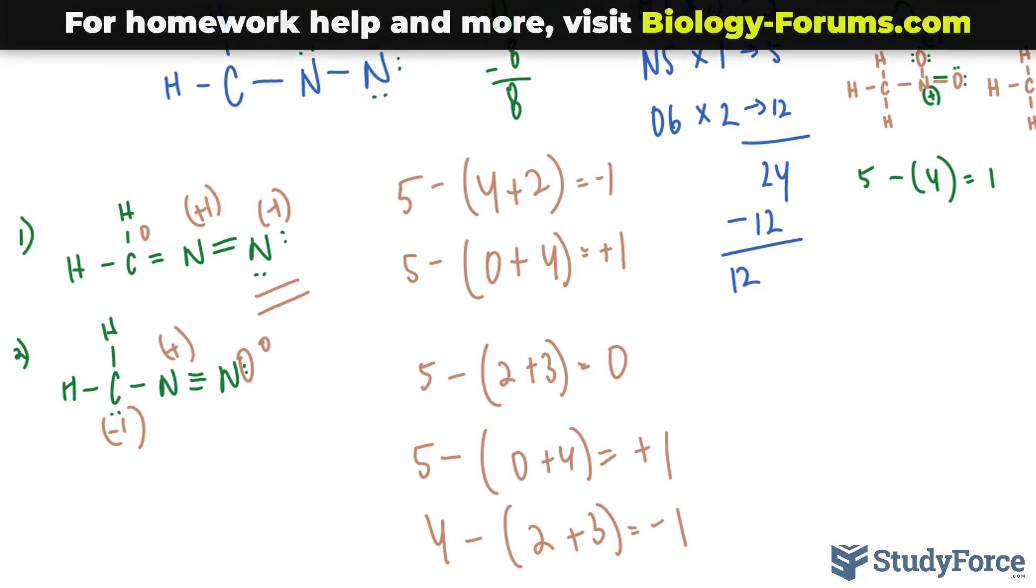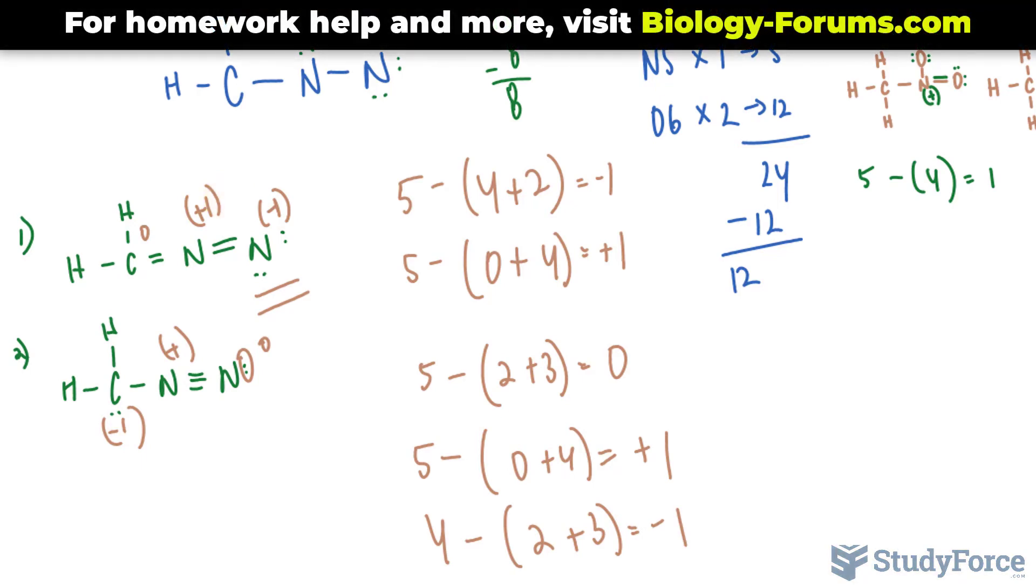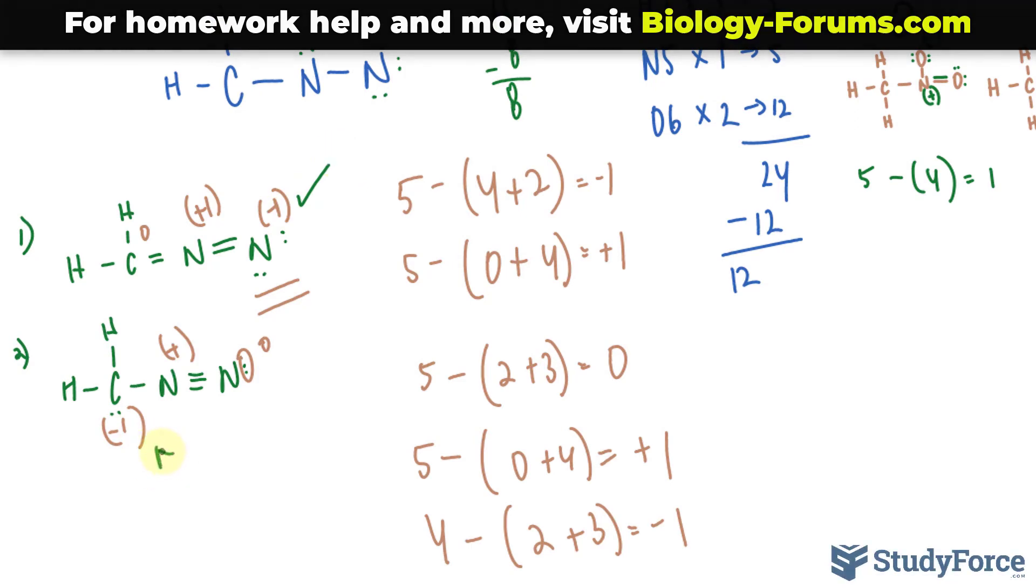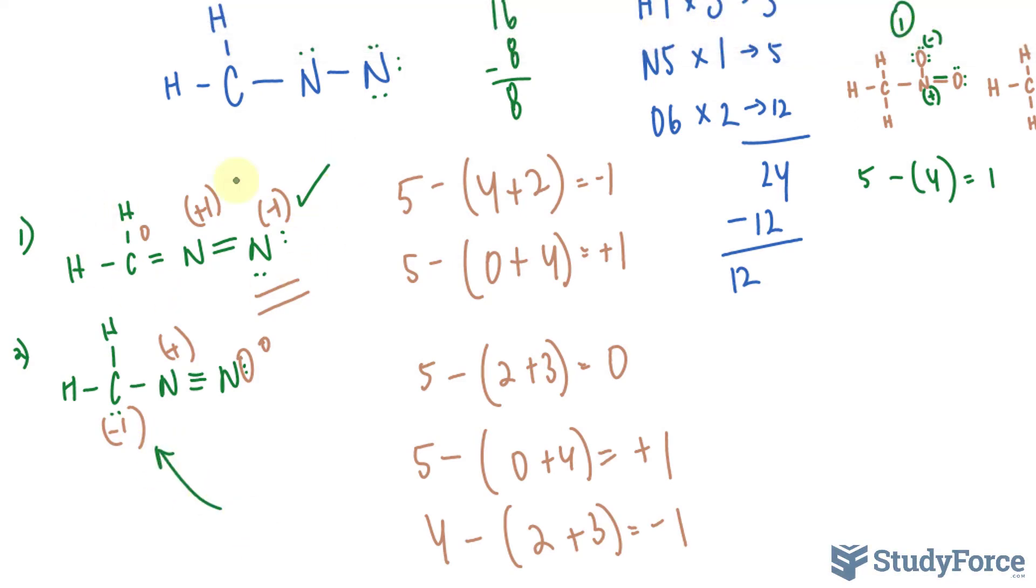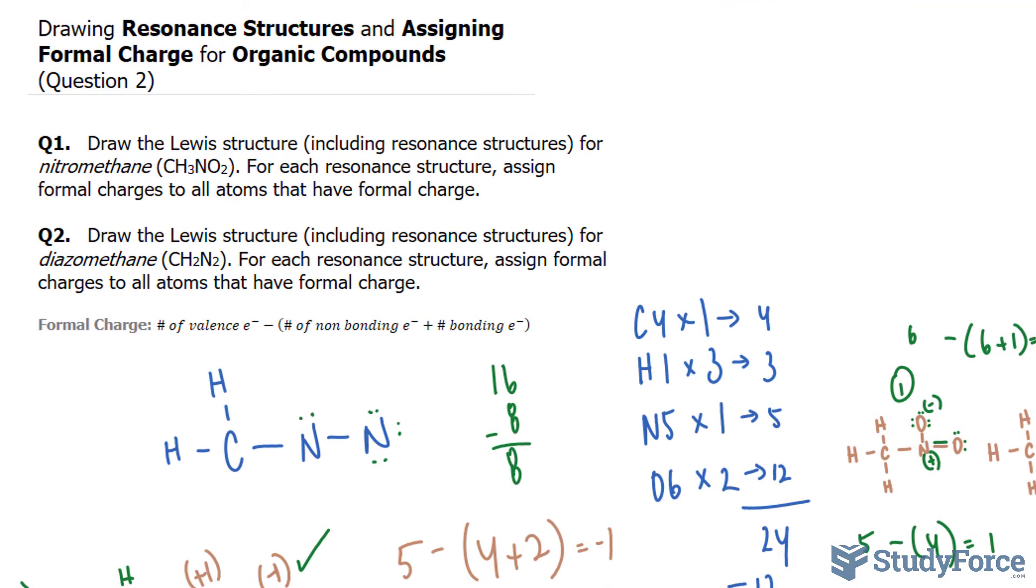So which one do we choose? Given that nitrogen is more electronegative than carbon, this is more likely to happen than this. So this is the resonant structure that is preferred. And there you have it. That is how to draw resonant structures and assign formal charges to organic compounds.